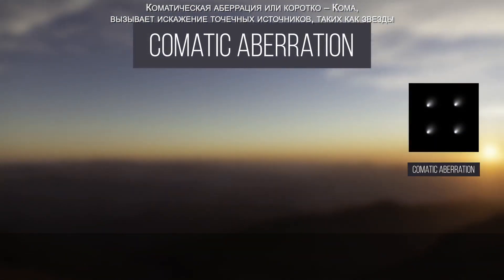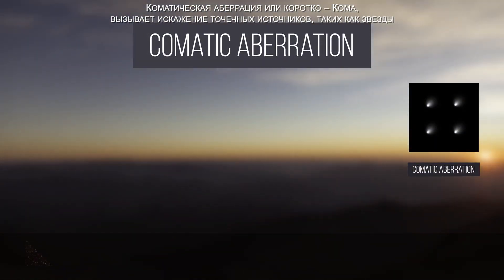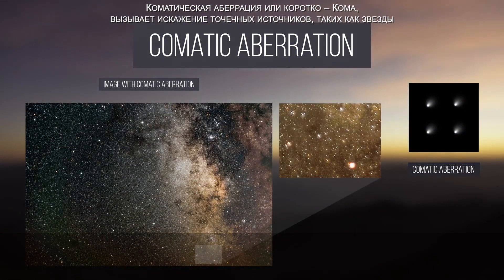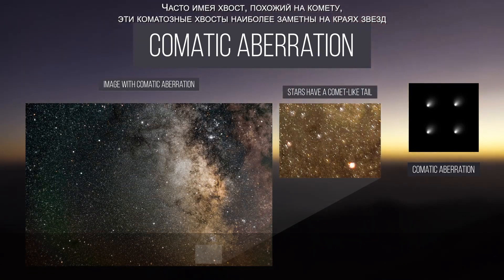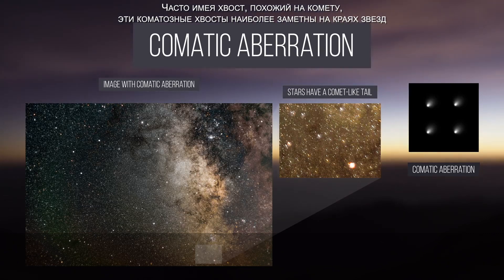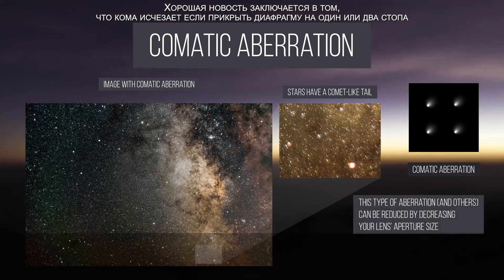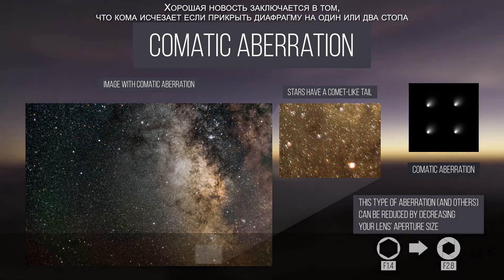Comatic aberration, or coma, causes point sources such as stars to appear distorted, often having a tail like a comet. These coma tails are most apparent near the edges of a photo. The good news is that coma disappears after stopping down most lenses one or two stops.